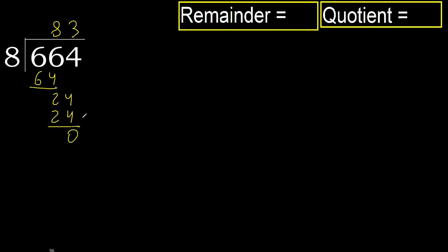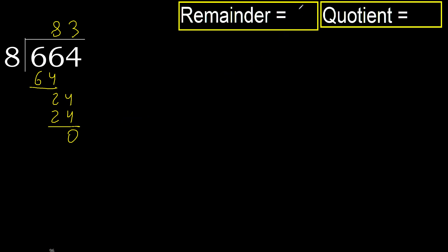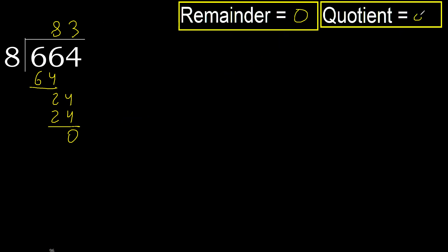Subtract next. There is no remaining number, therefore we finish. 664 divided by 8 is 83.